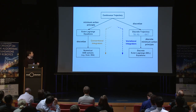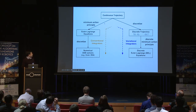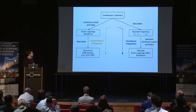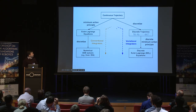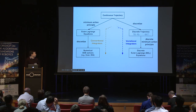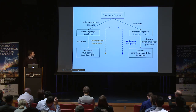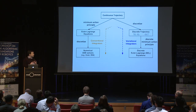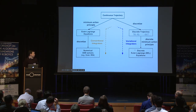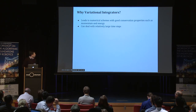This diagram shows the key difference. In conventional integrators, we apply the minimal action principle to a continuous trajectory to get the Lagrange equations, then integrate. In variational integrators, we first discretize the continuous trajectory into discrete configurations, then apply the discrete minimum action principle — which is similar to the continuous one but with a small tweak — to get the discrete Euler-Lagrange equation.